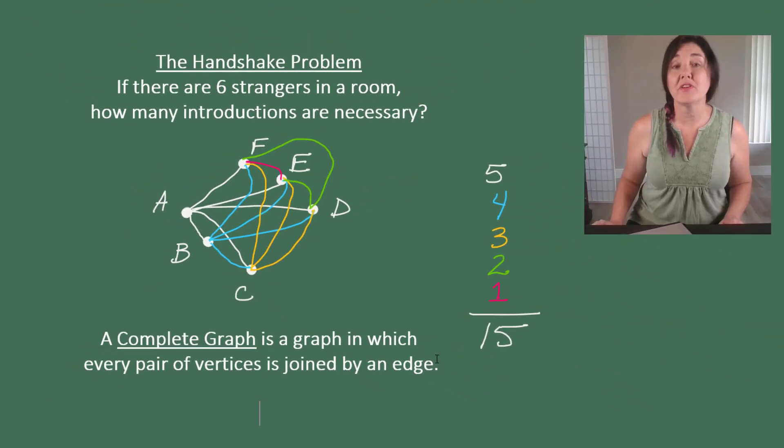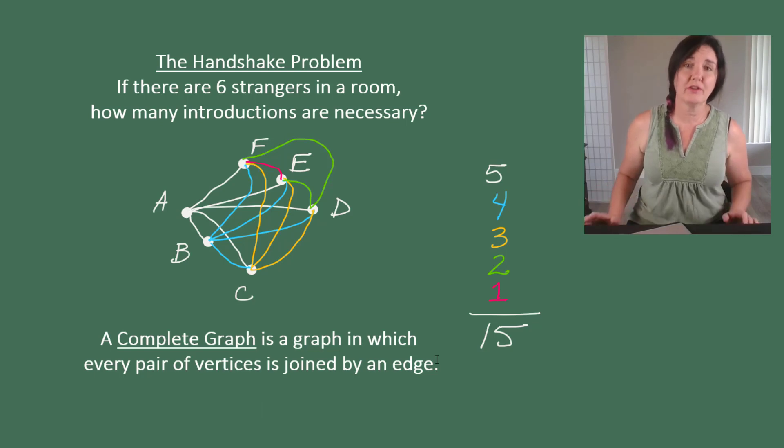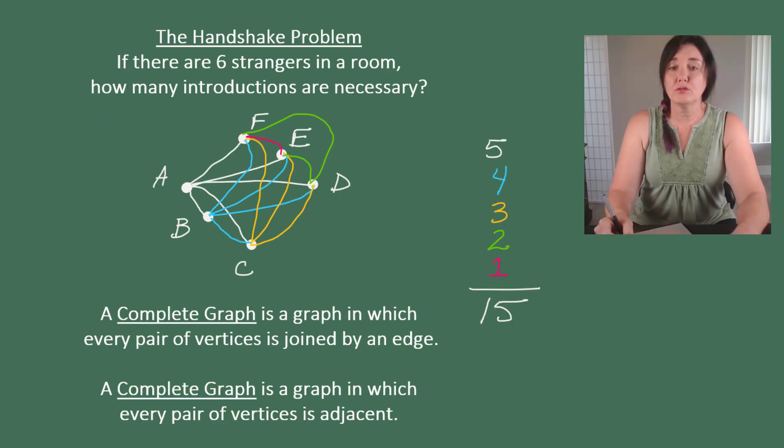This is an example of a complete graph. A complete graph is a graph in which each pair of vertices is joined by an edge. There's another way we can say that as well. Remember, when two vertices are joined by an edge, we call them adjacent. So we could also say that a complete graph is a graph in which every pair of vertices is adjacent.